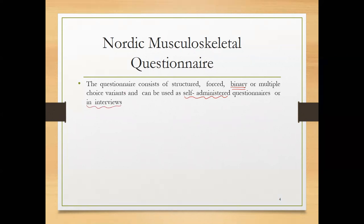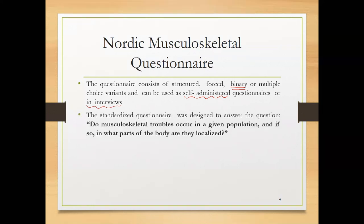This questionnaire can be filled by the worker himself, or the person who is assessing the situation and assessing the task can perform interviews and fill this questionnaire. The standardized questionnaire was designed to answer the question: do musculoskeletal troubles occur in a given population, and if so, in what parts of the body are they localized?